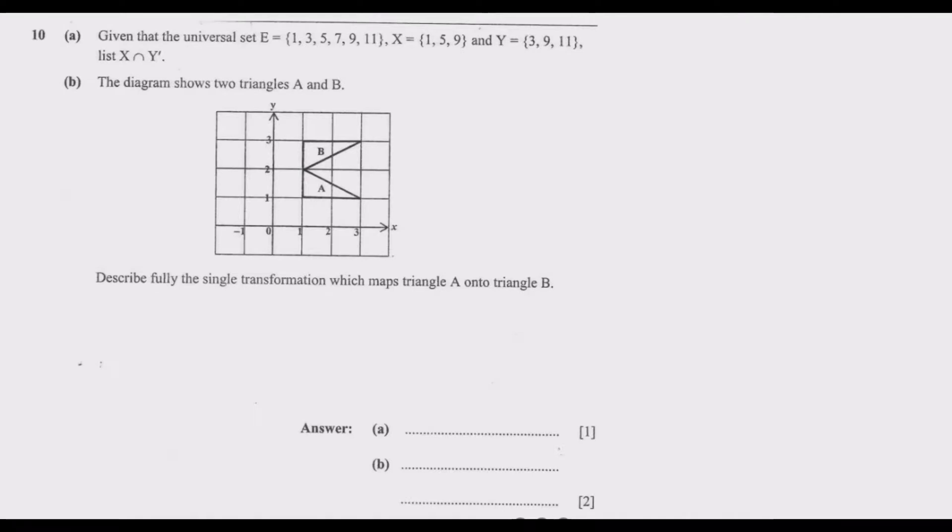Question 10A: Given that the universal set E equals {1, 3, 5, 7, 9, 10}, where X equals {1, 5, 9}, and set Y contains {3, 9, 11}. List set X intersection Y complement. So we need to find what is common between the elements in X and those not found in Y. The first thing is finding Y complement because we know what X is.